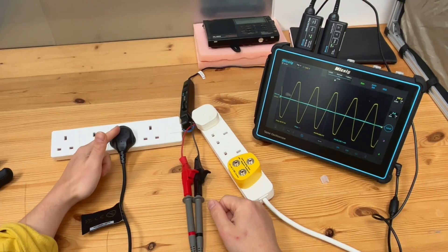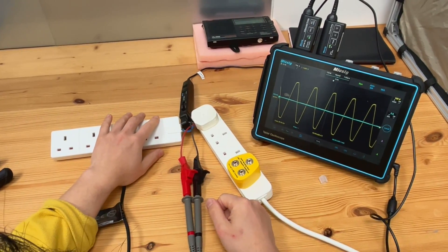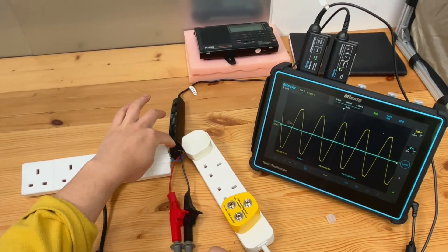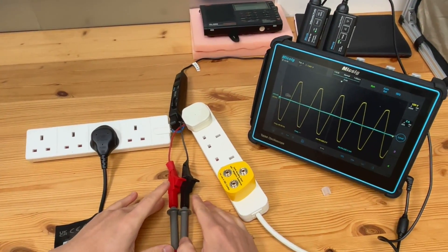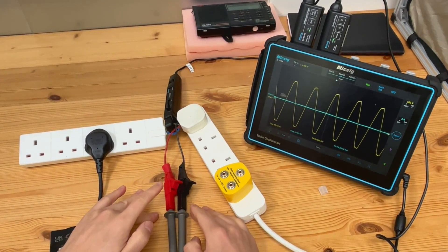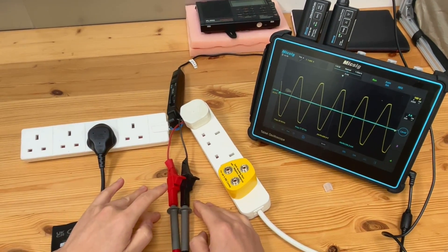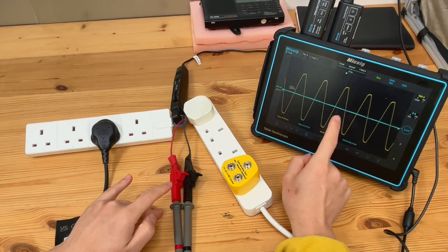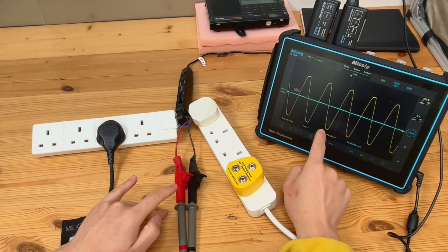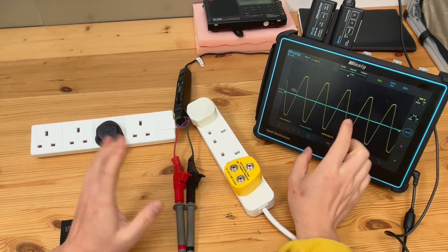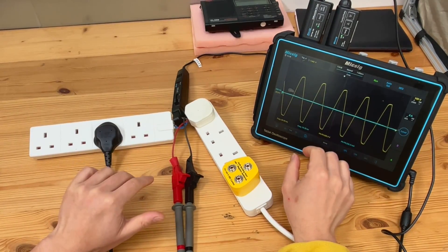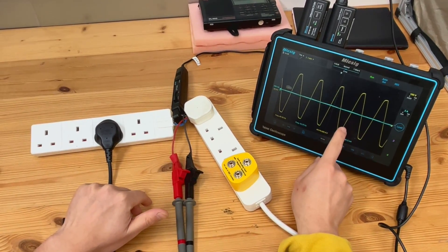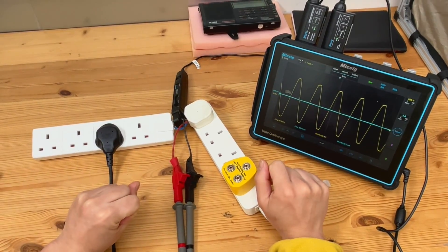The mains powered products plug into this extension lead where we can actually measure the live current by using current probe and also the mains voltage using a differential high voltage probe. So you can see currently we don't have any current but just the voltage. You can also see that the voltage from this environment, this mains network is not sinusoidal. You've got some harmonics already on the voltage waveform.